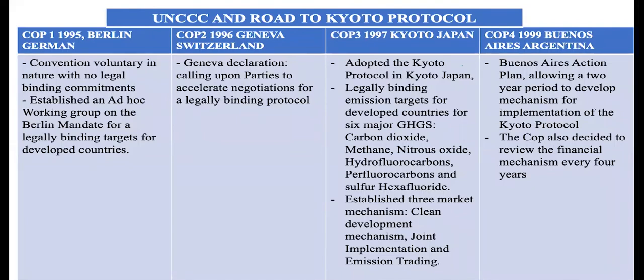The UNFCCC and the road to the Kyoto Protocol. We know that COP1 was in 1995 in Berlin, Germany. In Berlin, it was realized that the convention is mainly voluntary in nature, with no legally binding commitments, and this wouldn't advance the process of reducing emissions.